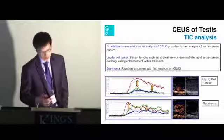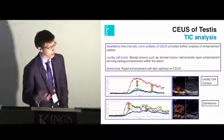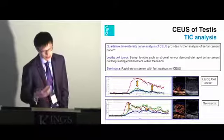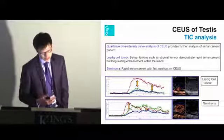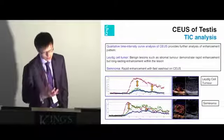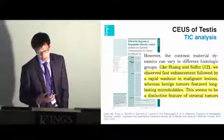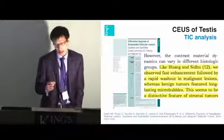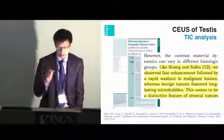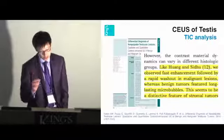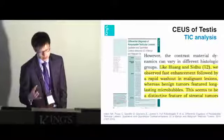These differences can be demonstrated on time-intensity curves, showing a larger differentiation between these tumors and the surrounding parenchyma. Studies have looked at peak values, time-to-peak values, and washout patterns to demonstrate differentiation between the two tumor types. When a lesion enhances rapidly with rapid washout, it is more likely malignant, whereas a benign vascular lesion features a long washout of microbubbles. These are useful features to further characterize a vascular testicular lesion.